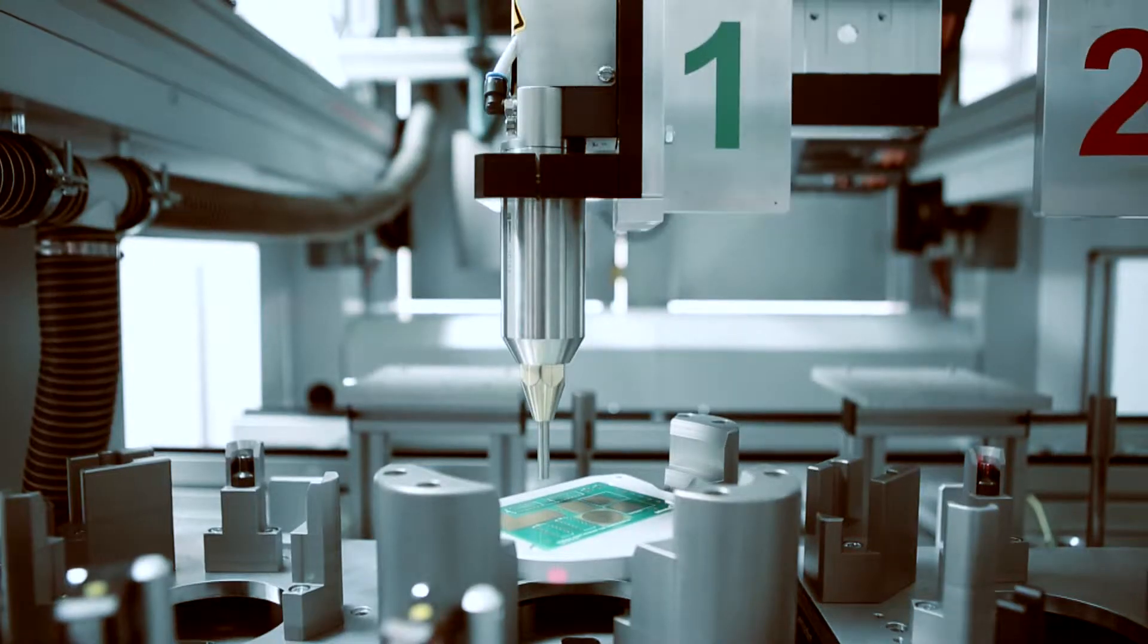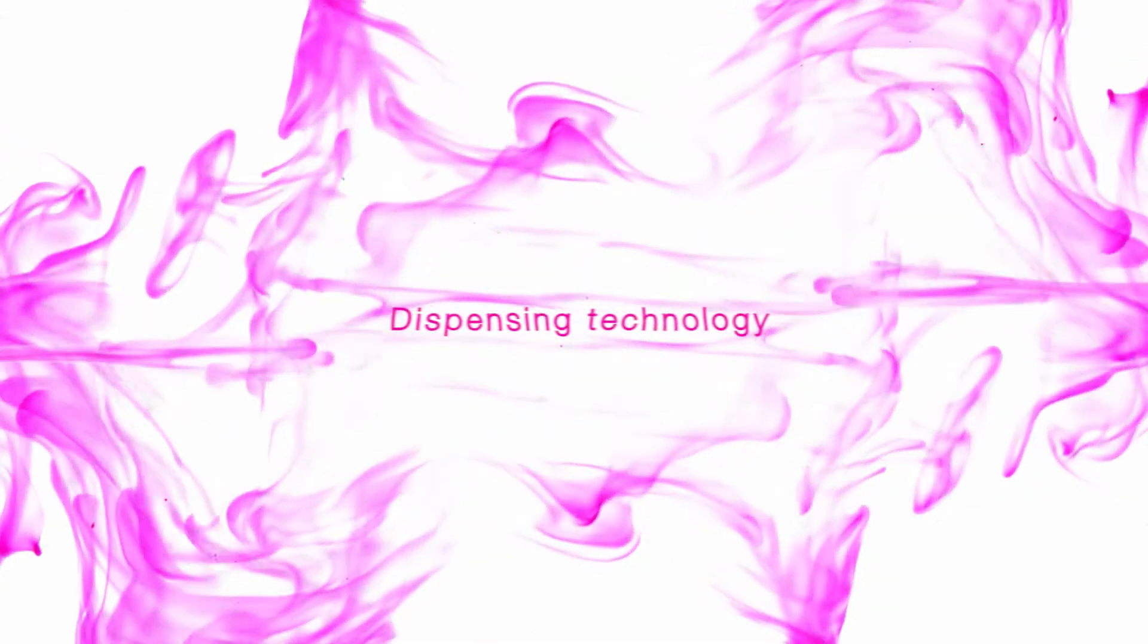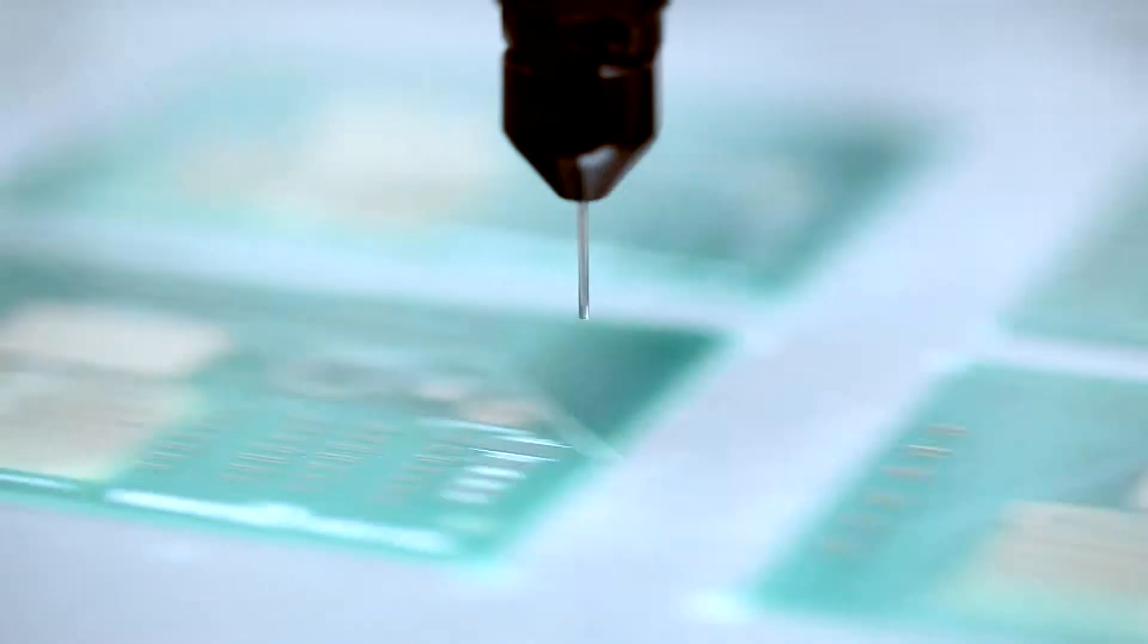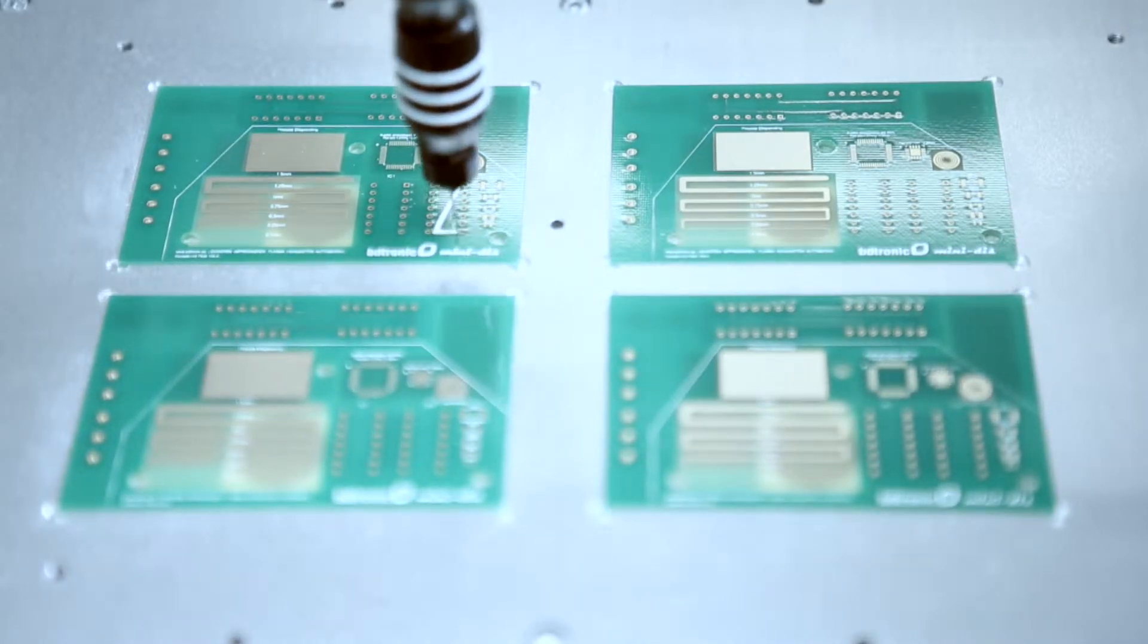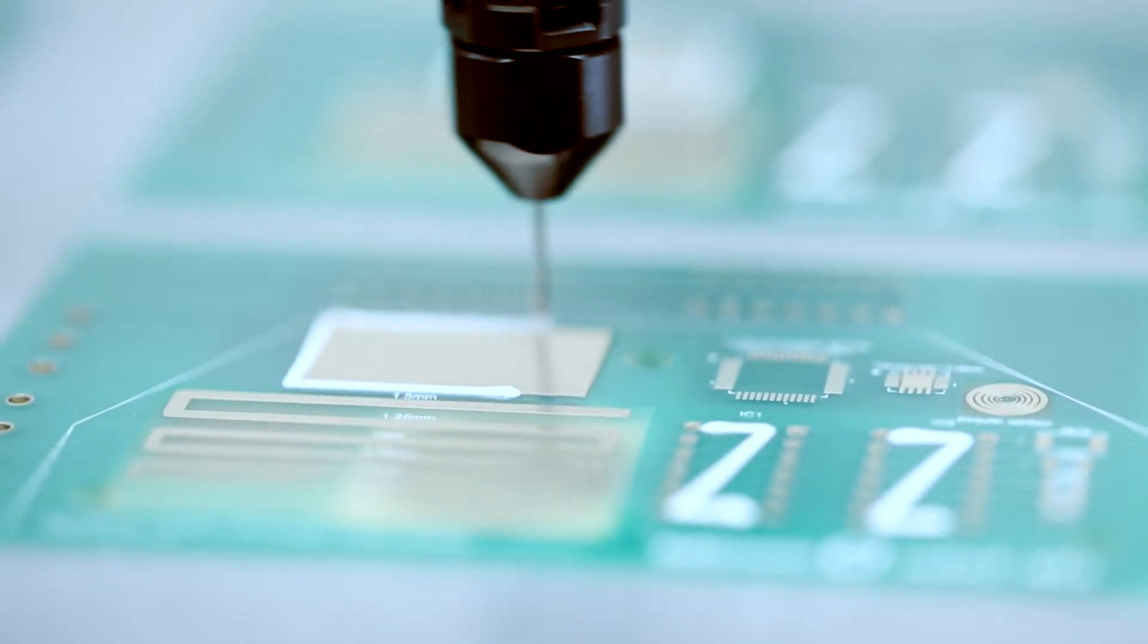Repeat accuracy is 99%. What is most important in dispensing? Essential in dispensing is the extremely precise application of the dispensing medium on the electronic element or component. Our systems are mostly multi-component units, which makes it just as important that the A component is mixed and applied in the correct proportion to the B component.